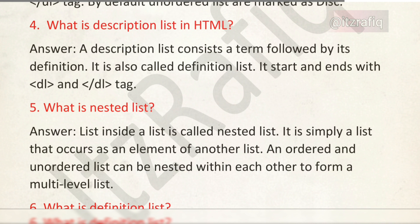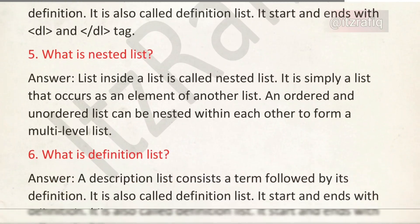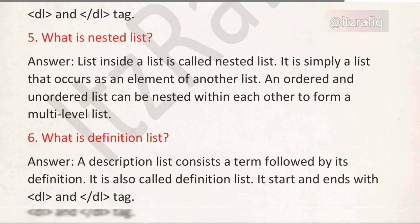What is a nested list? A list inside a list is called a nested list. It is simply a list that occurs as an element of another list. In a nested list, we can nest an ordered or unordered list together. There is no rule that only an ordered list or only an unordered list should be nested.